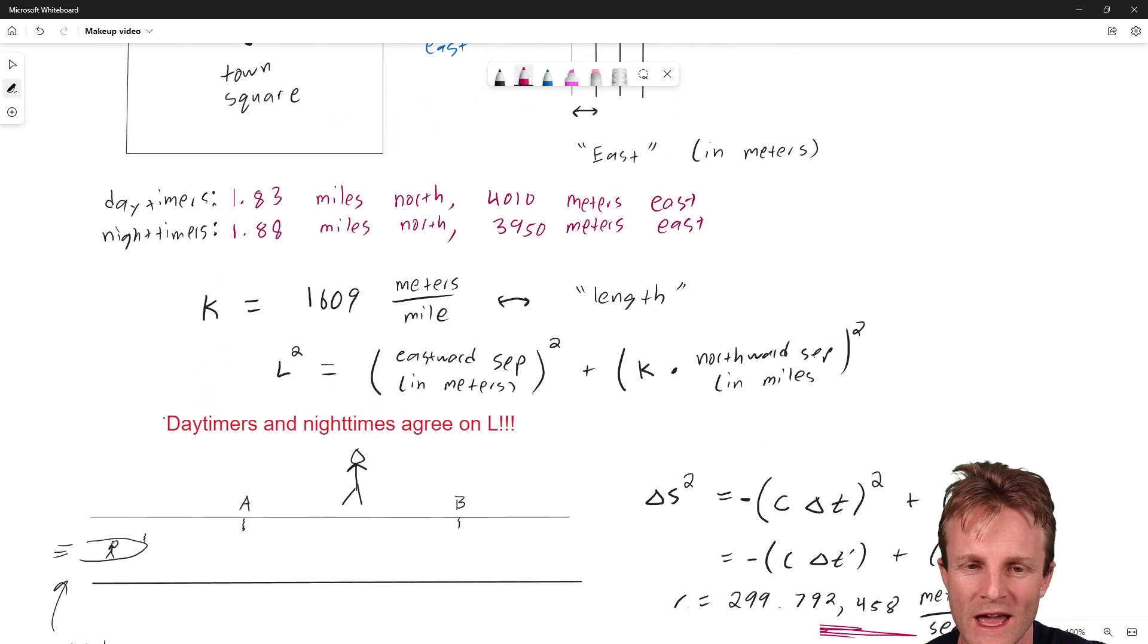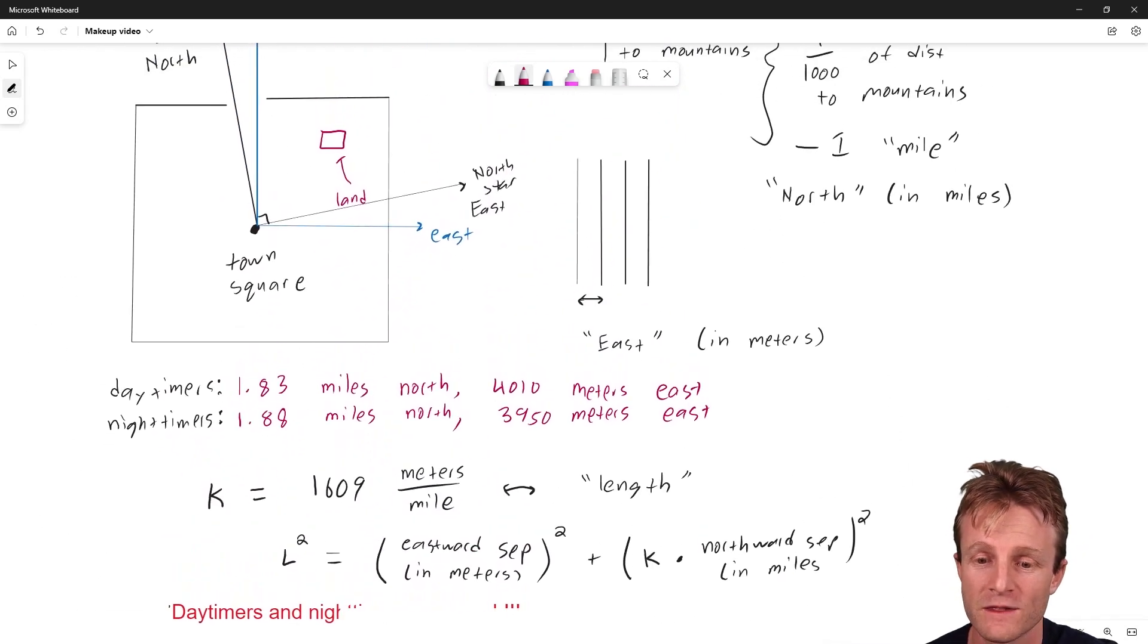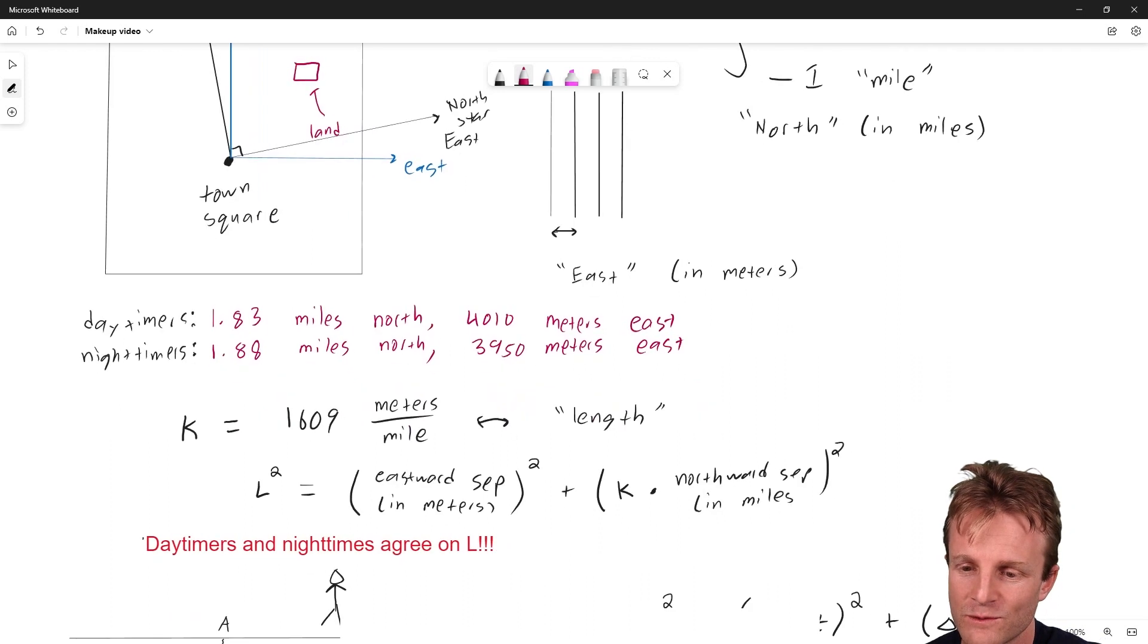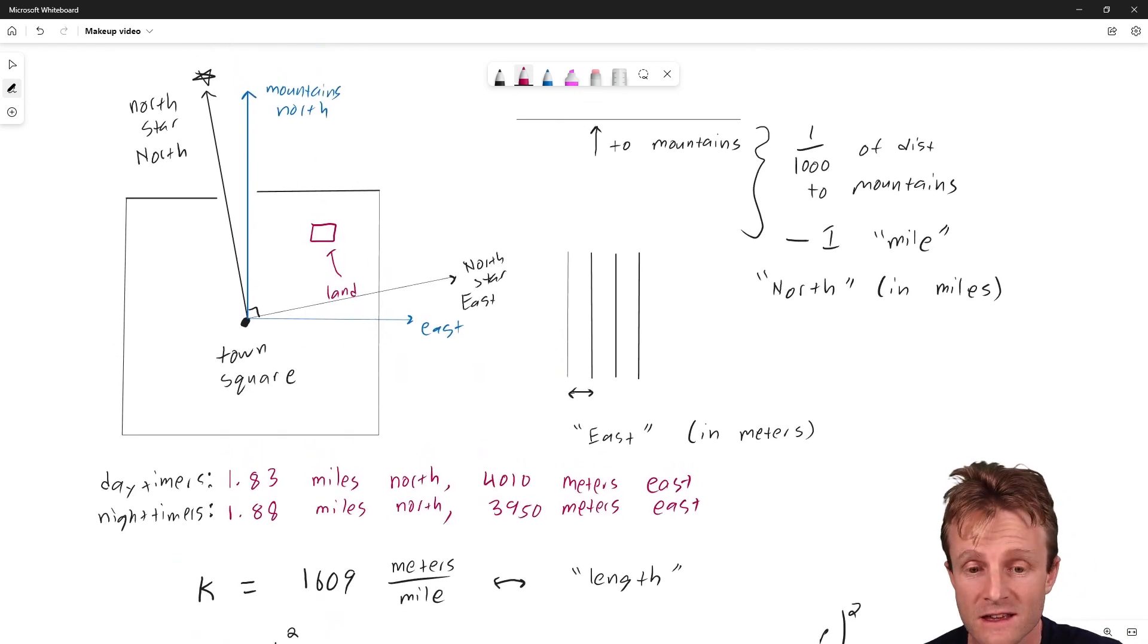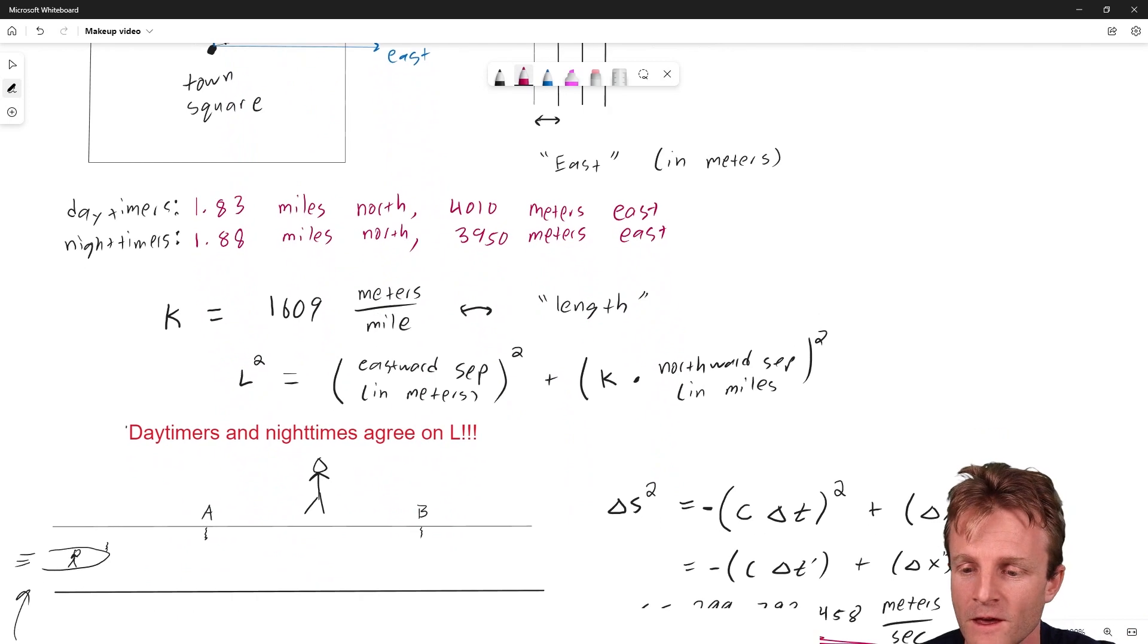You know, you could get away in the daytime or nighttime universe with measuring east in meters and north in miles. And you just have this K times the northward separation in miles in your formulas, it'd be fine. But it's kind of annoying. And it seems very silly because we understand this thing distance to be something invariant, something that the day timers and night timers can agree on. But when you change from the daytime to the nighttime coordinate system, when you rotate, the meaning of delta x and delta y, they get all mixed up together. So it's crazy to use different units for delta x and delta y, because they get all mixed up together under a good symmetry of nature rotations. Well, the same is true here.